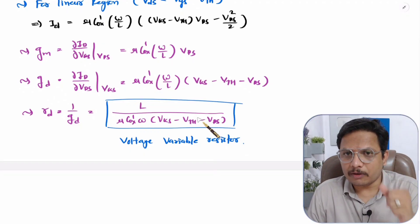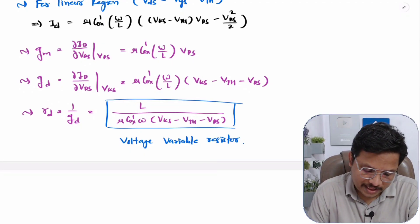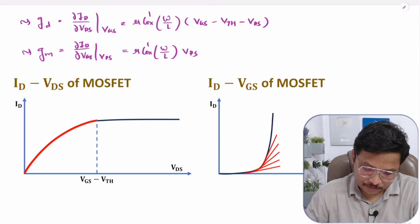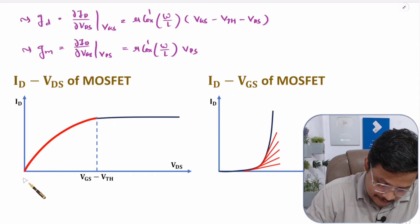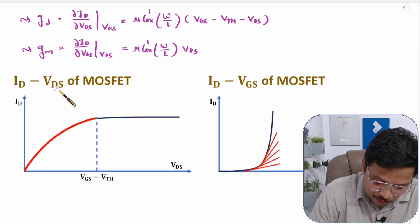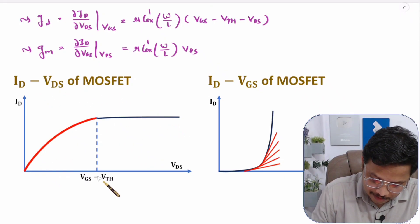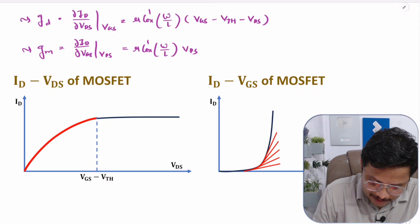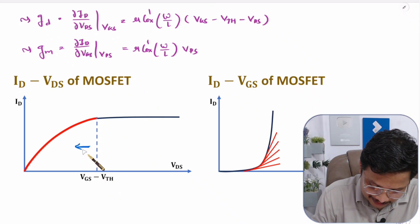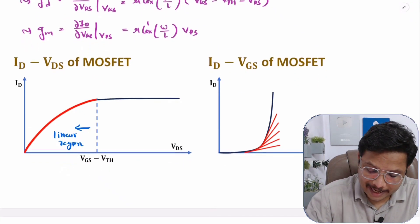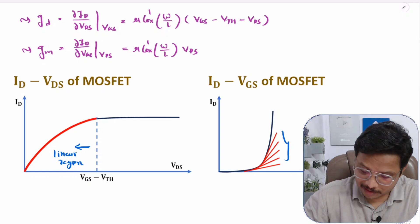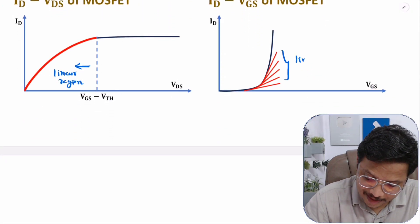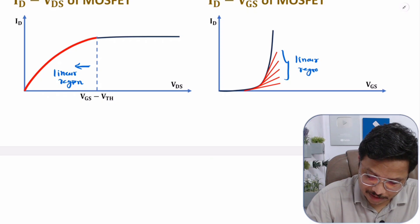Now I want to explain the values of GM and RD with respect to the MOSFET characteristics. In the ID vs. VDS characteristics, when VDS is lower than VGS − VTH, the curve corresponds to the linear region. In the ID vs. VGS characteristics, the red color curve represents the linear region.